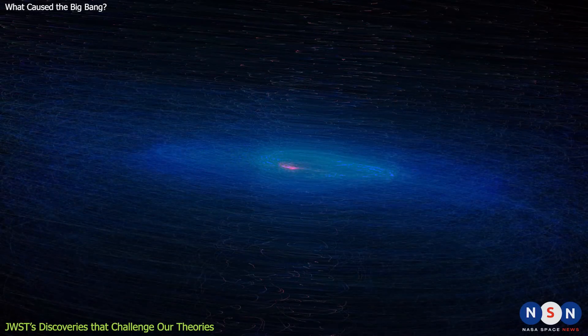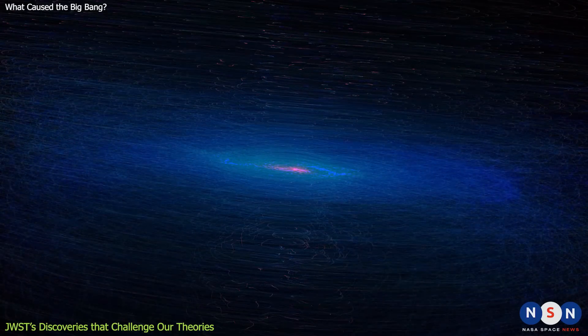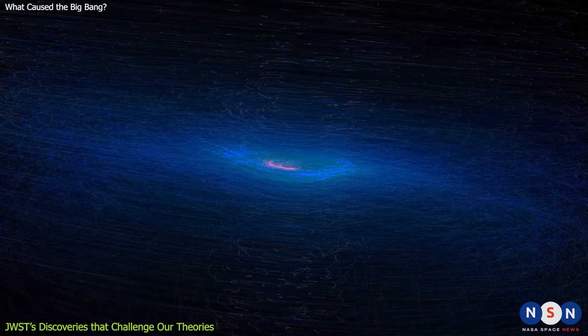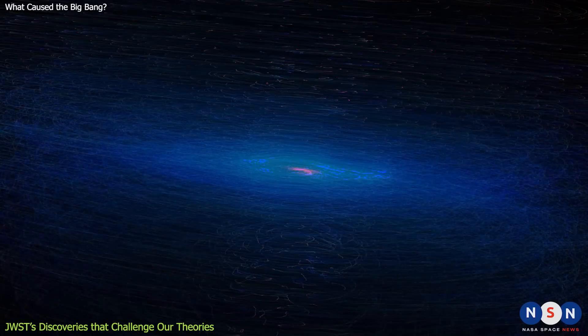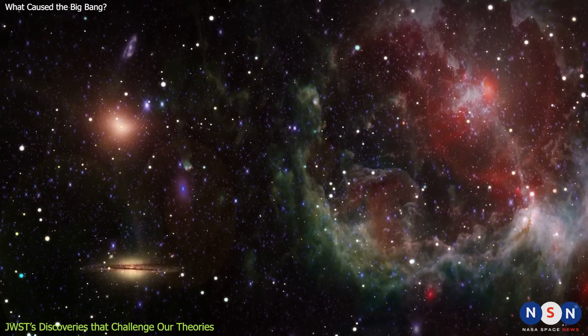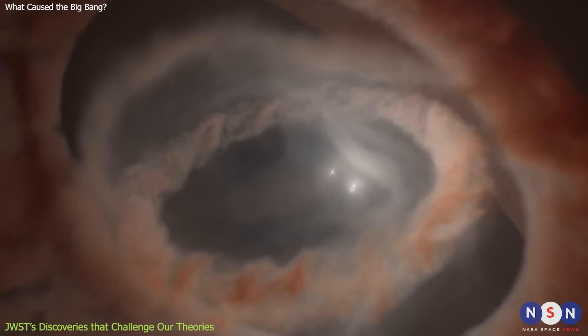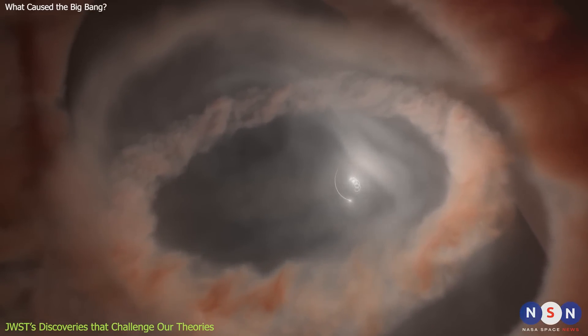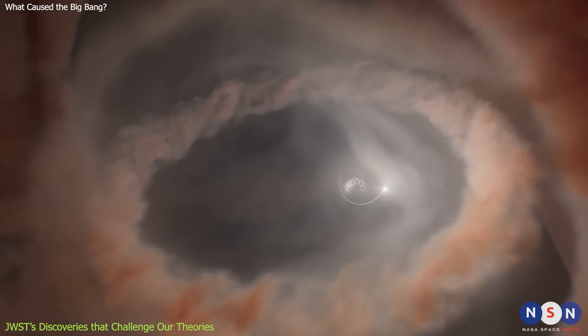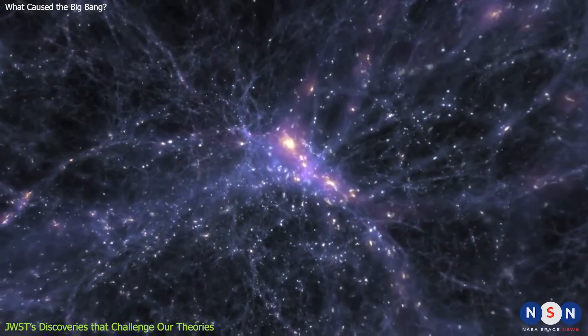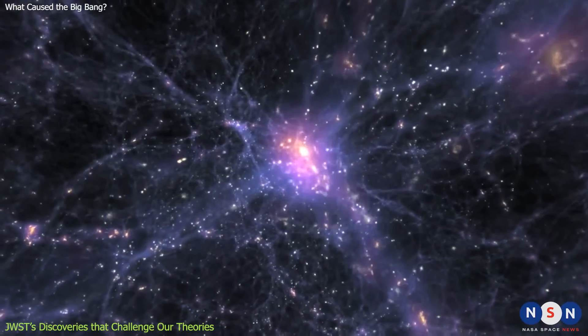What's surprising about these galaxies is that they are very bright and active, producing new stars at a rate of hundreds or thousands per year. That's much faster than most galaxies we see today, which only produce a few stars per year on average. How did these galaxies become so productive so early on? And how did they form such a large and dense protocluster in such a short time? These questions are hard to answer with our current understanding of galaxy formation and evolution.